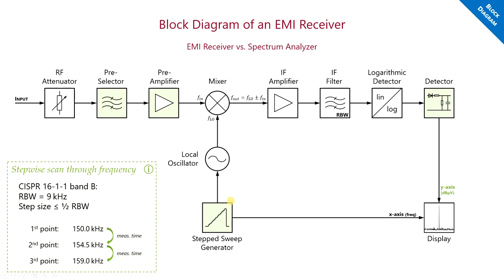But there is another important difference. Spectrum analyzers usually sweep continuously through the frequencies, while an EMI receiver performs this procedure step-wise and remains at each frequency step for a certain predefined time. The CISPR-16-1-1 standard defines how both the resolution bandwidth and the step size must be chosen correctly.